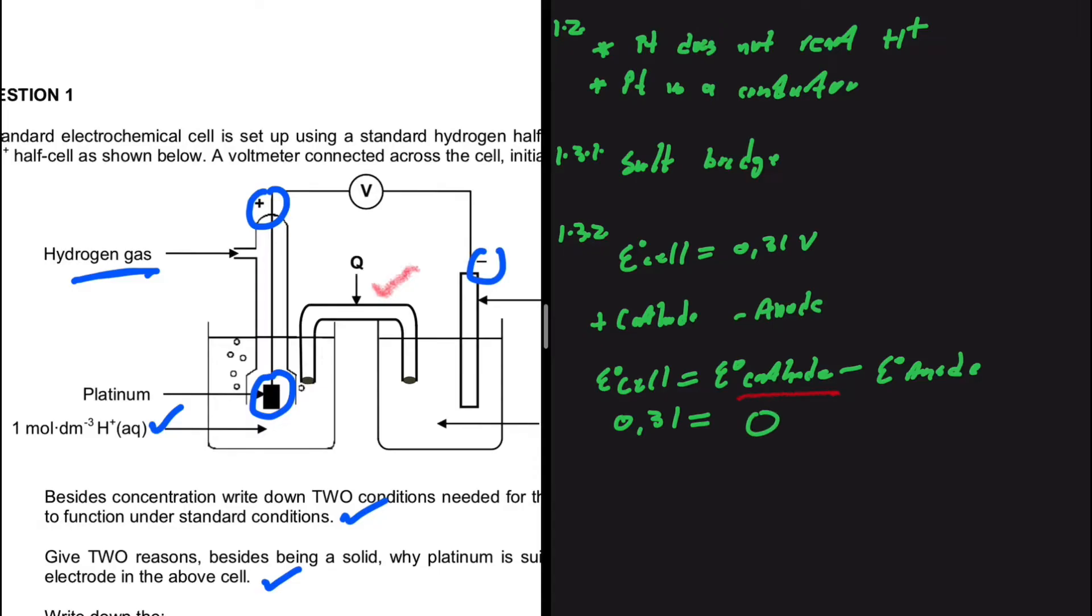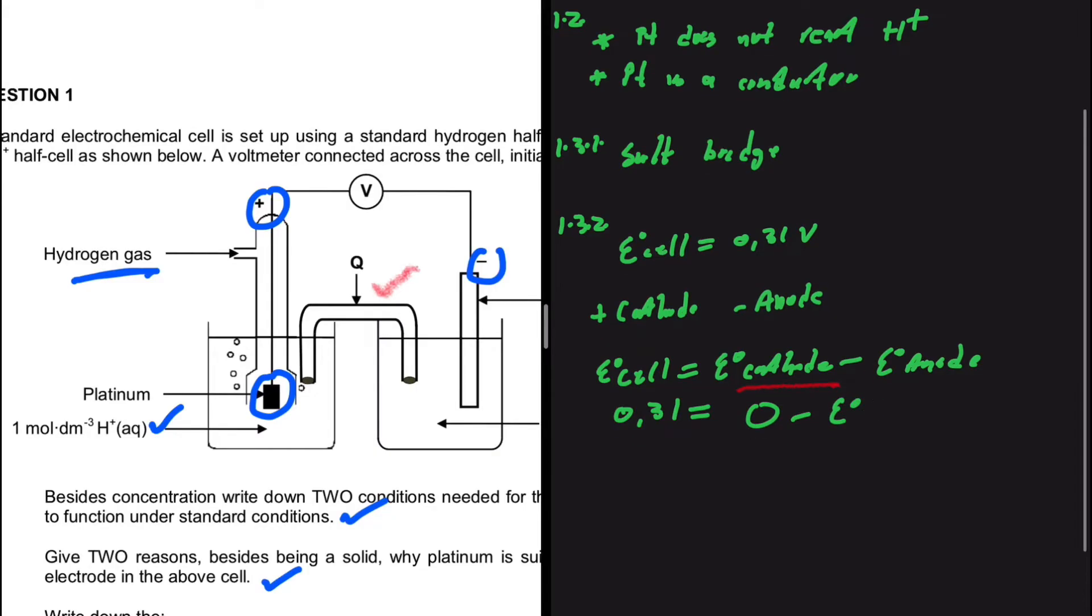So what is the potential of the cell? This is 0.31 being equals to the potential at the cathode. The potential at the cathode is the potential of the hydrogen gas, as we can clearly see that it is at the positive terminal. So we're going to have zero. If you look at your table for standard reduction potentials, the potential of hydrogen gas is 0 minus the potential at the anode.